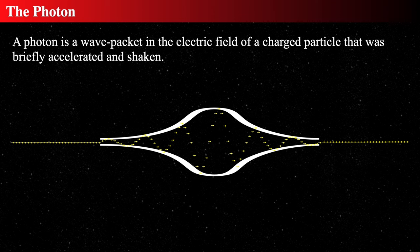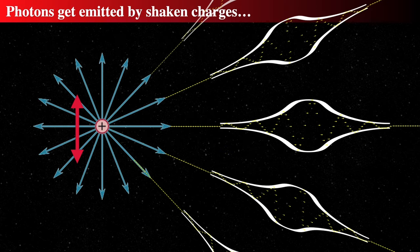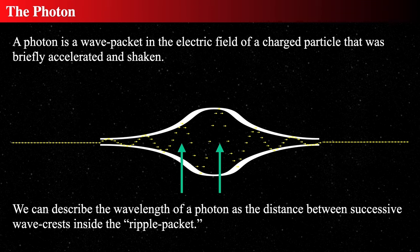When you shake an electron or proton it emits photons in all directions, and the photons can be polarized depending on the nature of the shaking. These photons propagate along field lines at the speed of light and have a distinct wavelength. We can describe the wavelength of a photon as the distance between successive wave crests inside the ripple packet — the distance from the highest point to the next highest one.